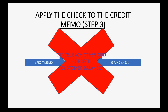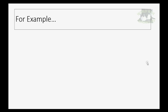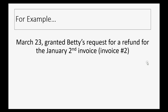Writing a refund check for a paid invoice is literally as easy as one, two, three. For example, let's imagine that on March 23rd we granted Betty's request for a refund for the January 2nd invoice, which is invoice number two, and that's $1,400.